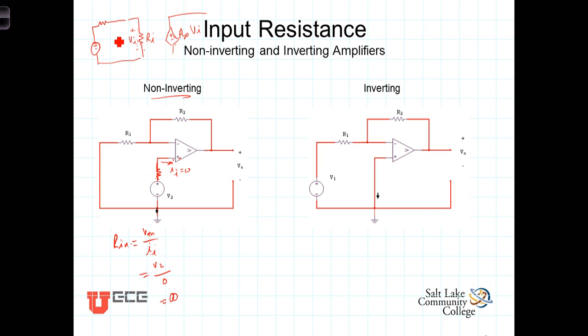Now, let's determine the input resistance for the inverting amplifier. We're going to see that it's not nearly as satisfying as this infinite resistance on the non-inverting. Once again, we have the voltage VIN, which in this case is V1, and we have a current flowing from the source into the amplifier, calling that IN.